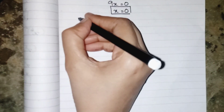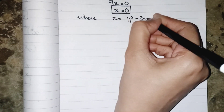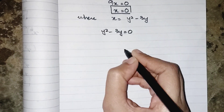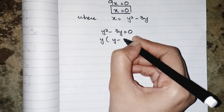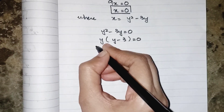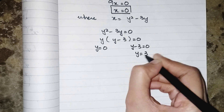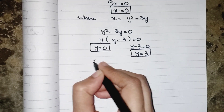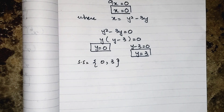But we know that x is an intermediate variable and x equals y squared minus 3y. So we can say y squared minus 3y equals 0. Taking y as common from both terms: y times (y minus 3) equals 0, giving y equals 0 or y minus 3 equals 0, so y equals 3. We get two values of y, so our solution set is {0, 3}. Hope you like the video, please share and subscribe, take care, bye!